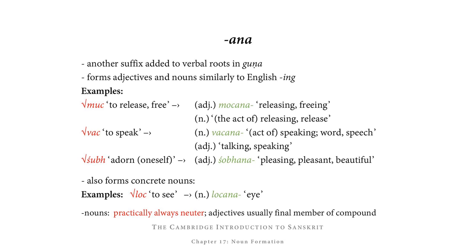On the basis of śubh, to adorn or to adorn oneself, we get the adjective śobhana, meaning pleasing, pleasant, or beautiful. Sometimes adding -ana also results in concrete nouns; for example, from loc, to see, we get the noun locana, meaning eye. Nouns formed by the addition of -ana are practically always neuter, and adjectives ending in -ana are not always but often the final member of a compound.